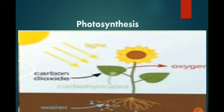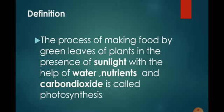Now let us understand what is photosynthesis. The process of making food by green leaves of plants in the presence of sunlight with the help of water, nutrients and carbon dioxide is called photosynthesis.